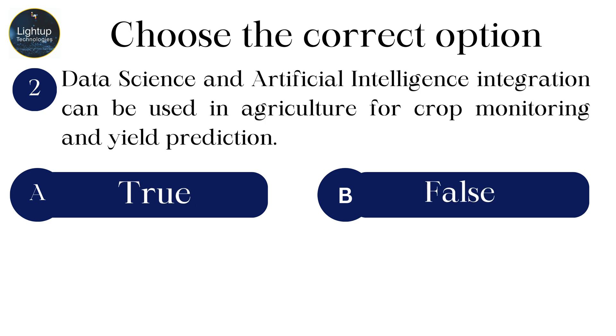Data science and artificial intelligence integration can be used in agriculture for crop monitoring and yield prediction.